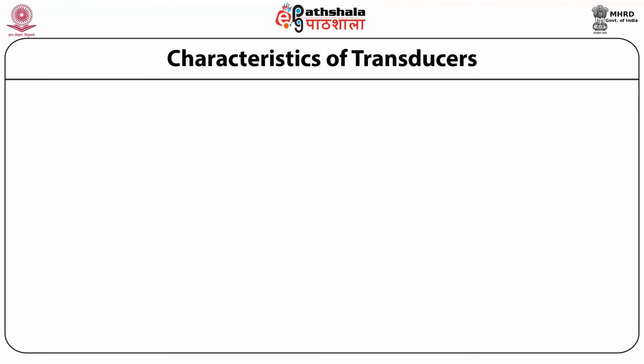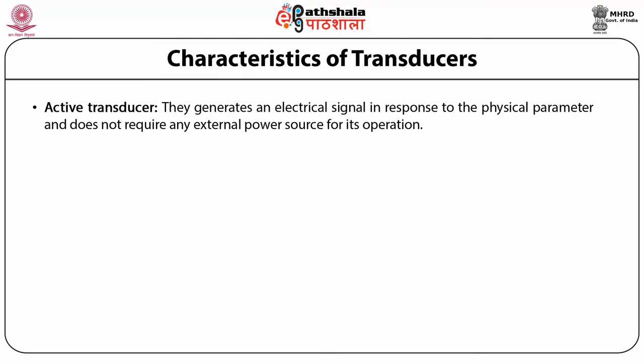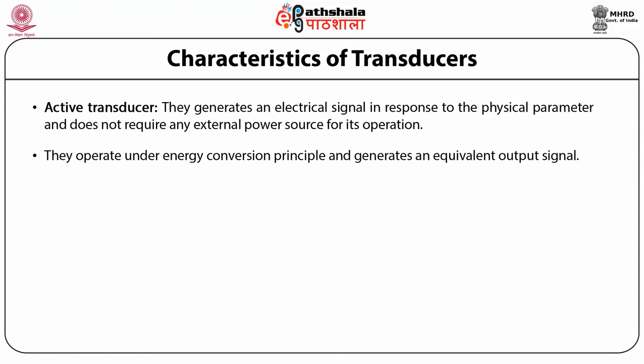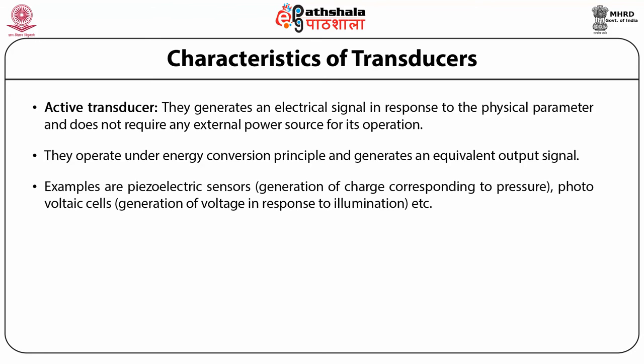There are two types of transducers — active and passive. An active transducer generates an electrical signal in response to the physical parameter and does not require any external power source for its operation. They operate under energy conversion principles and generate an equivalent output signal. Examples are piezoelectric sensors — that is, generation of charge corresponding to pressure — and photovoltaic cells, which generate voltage in response to illumination.